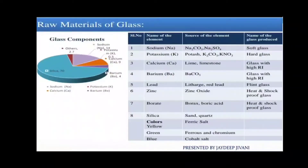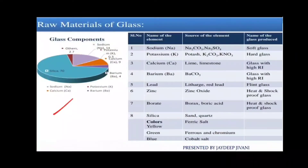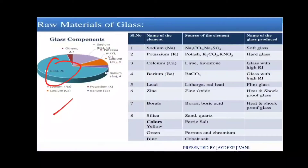Hello friends, I hope you're fit and fine. Today we will learn about the raw material of glass — which raw materials are used for the manufacturing of glass. Here is the composition of glass and how much amount of raw material is used. The highest percentage is silica — silica is 70 percent.